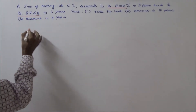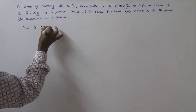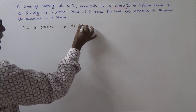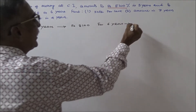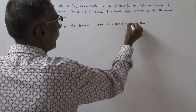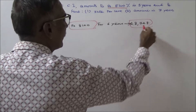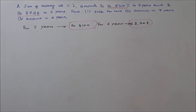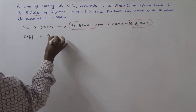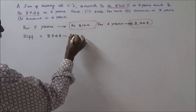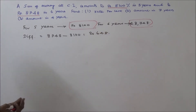For 5 years the amount is Rs.8100, and for 6 years the amount is Rs.8748. Now we have to calculate the difference between the 5-year and 6-year amounts. The difference is 8748 minus 8100, which equals Rs.648. So Rs.648 is the difference in amount.